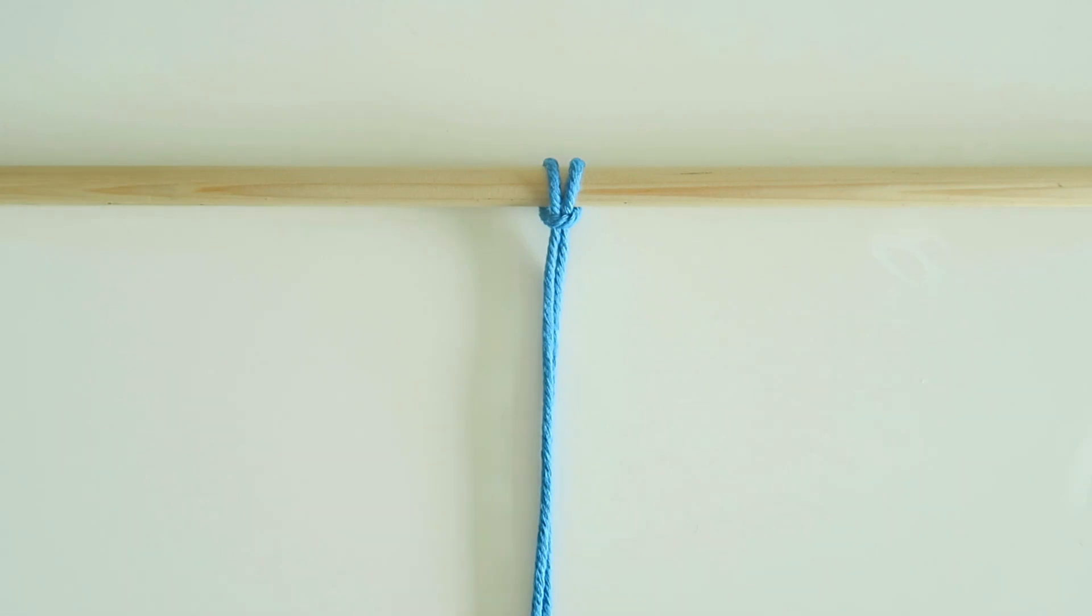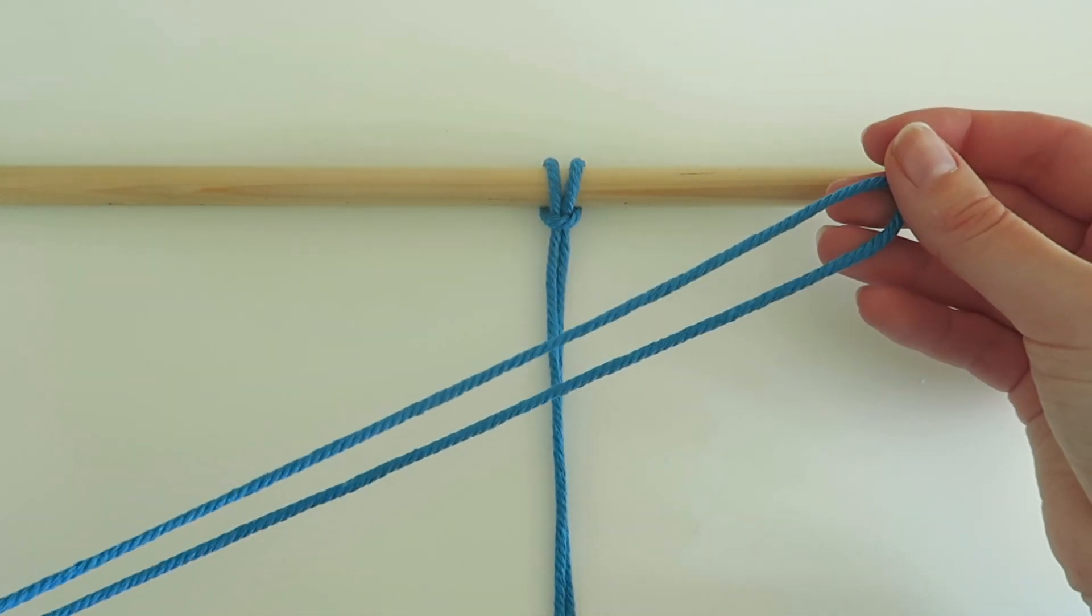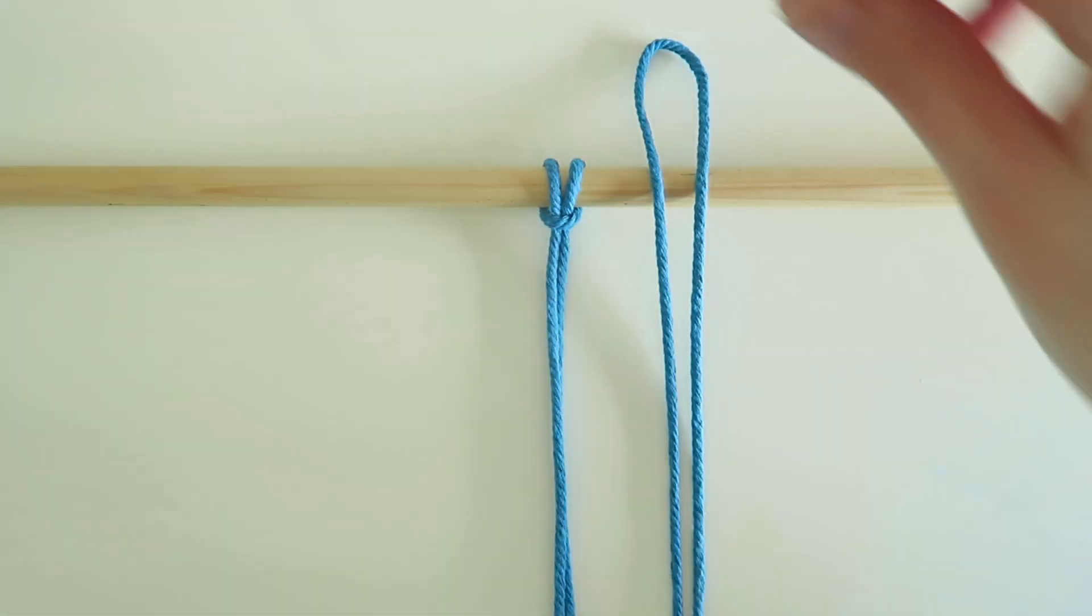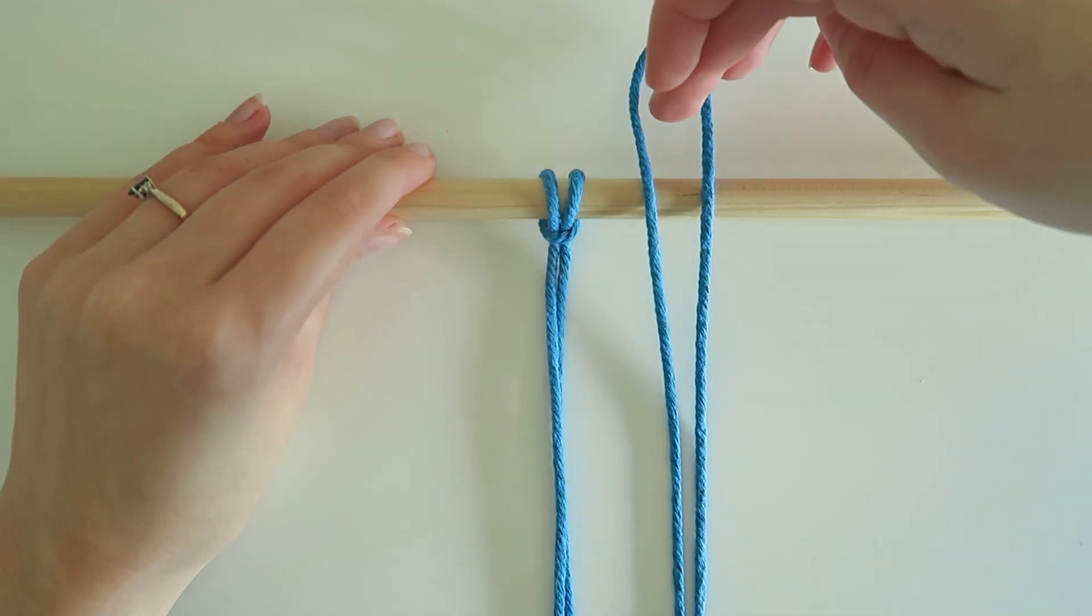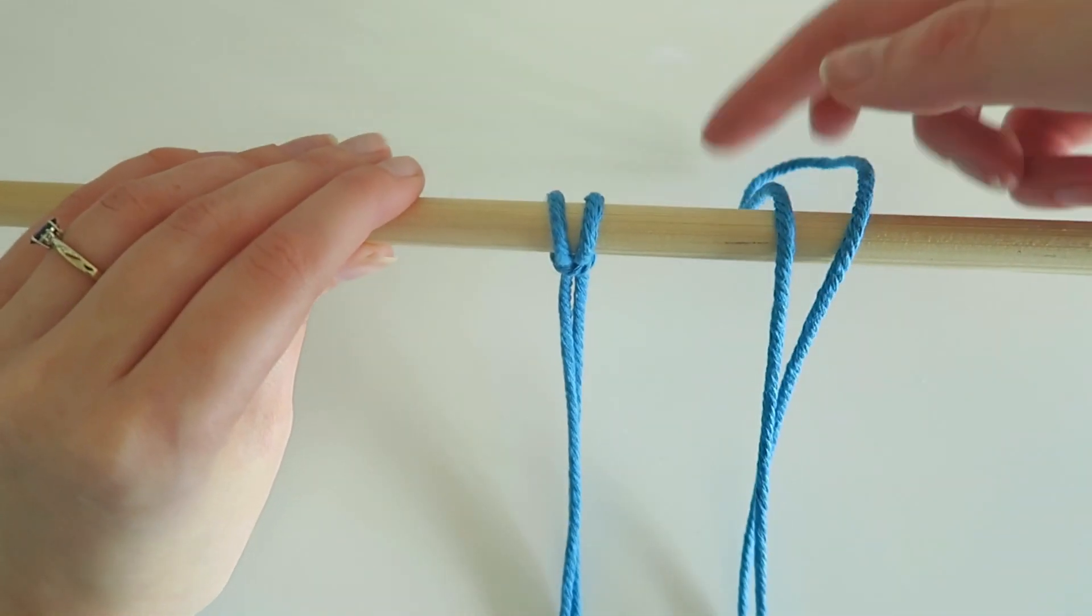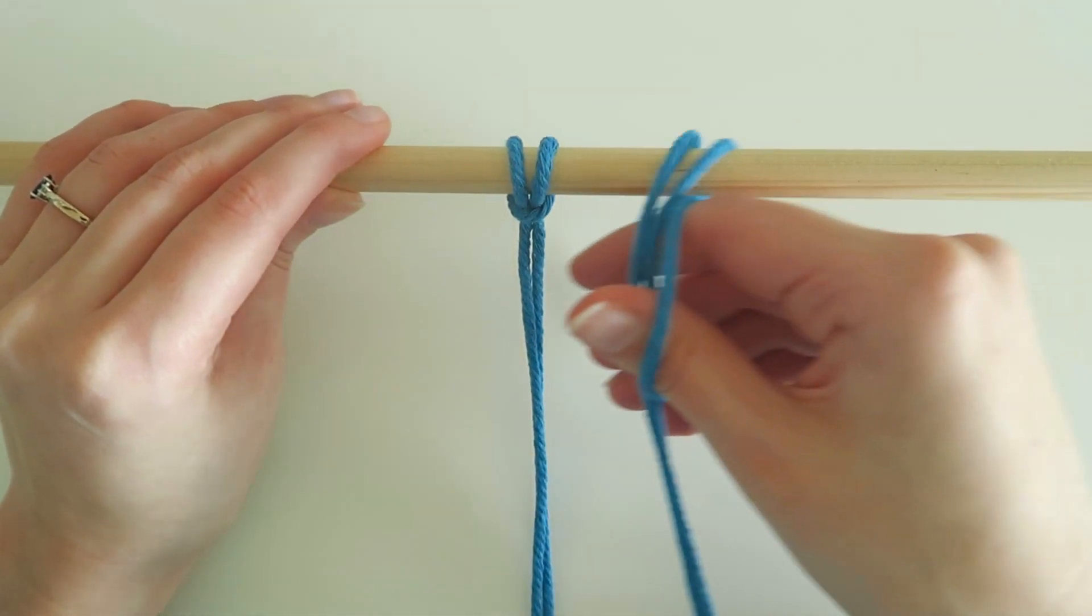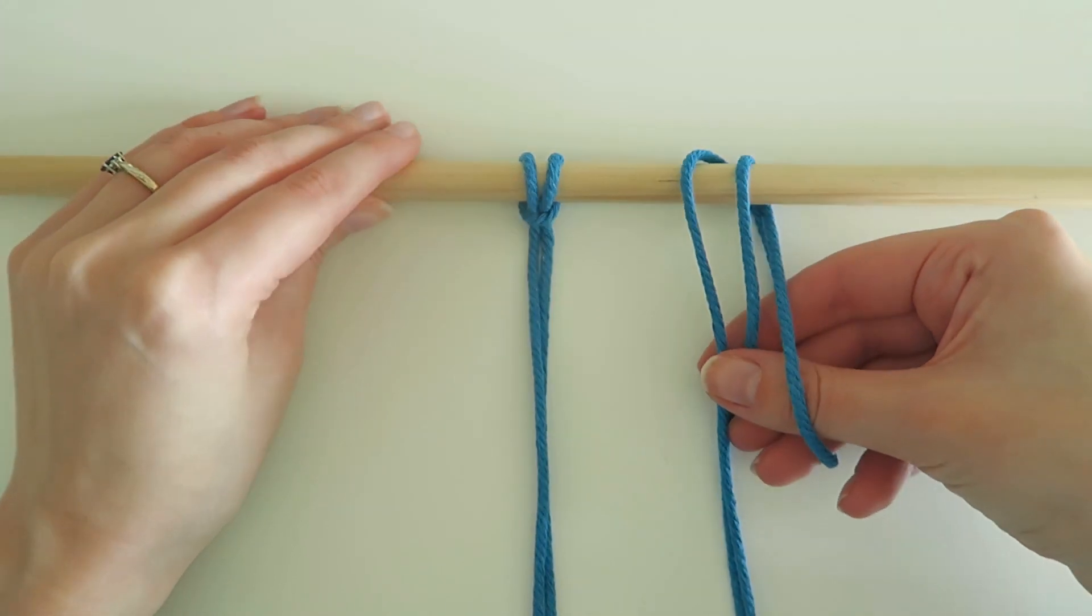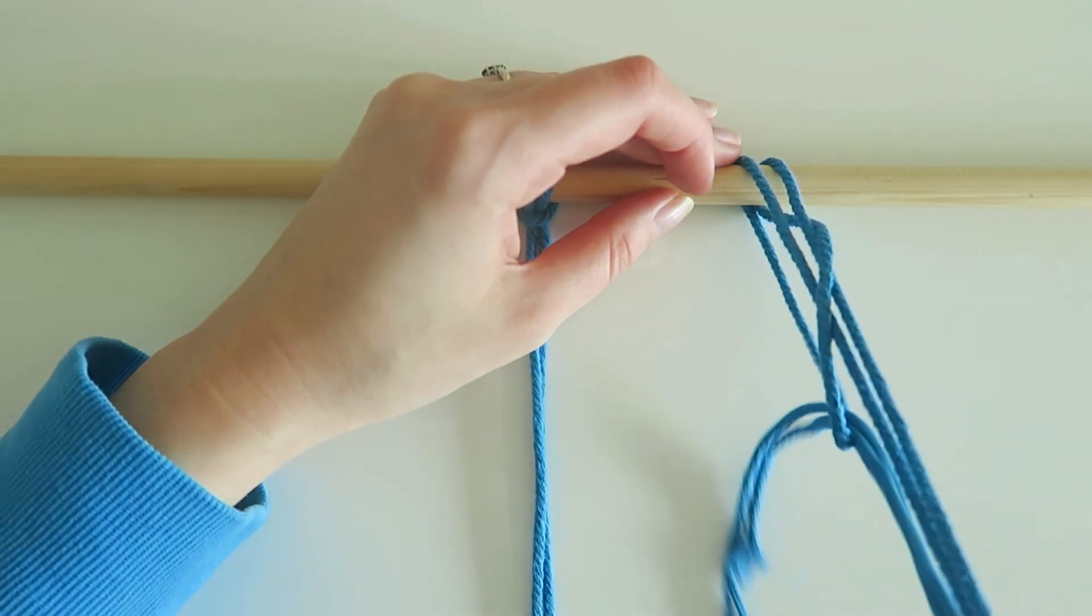So I'm going to do the same thing again with my other piece of string. Grab your string and fold it in half, then we're going to drape that again over the top of your dowel. We're going to bring that folded section behind the dowel and pop your fingers into that hole there so that you're ready to grab these two strings and pull the string all the way through that hole. So we're back to that shape again.